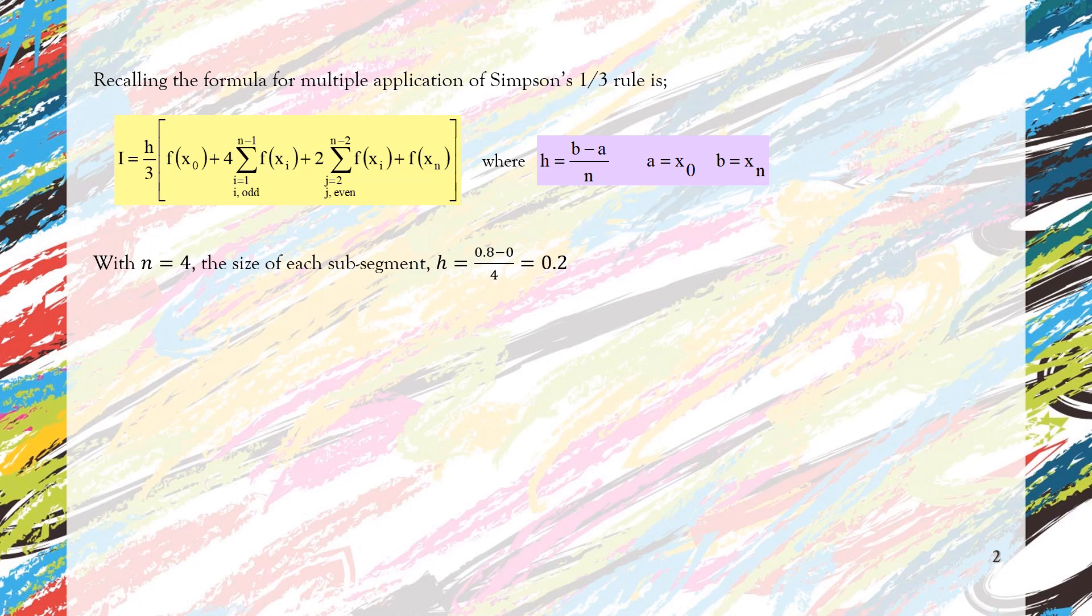In this problem, the n or the number of segments is 4. So the equispaced segment is equal to (0.8 - 0)/4 = 0.2.